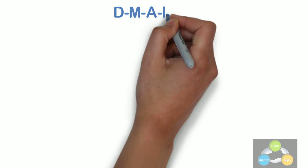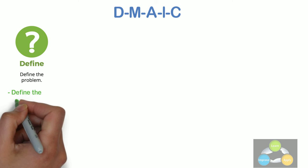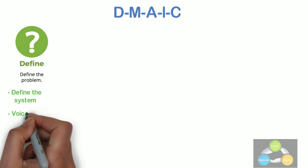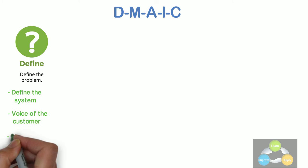The DMAC project methodology has five phases. Define. This is the very first phase in DMAC and it includes: define the system, the voice of the customer and their requirements, and the project goals specifically.